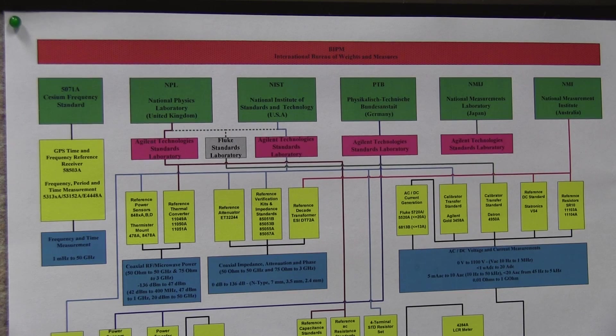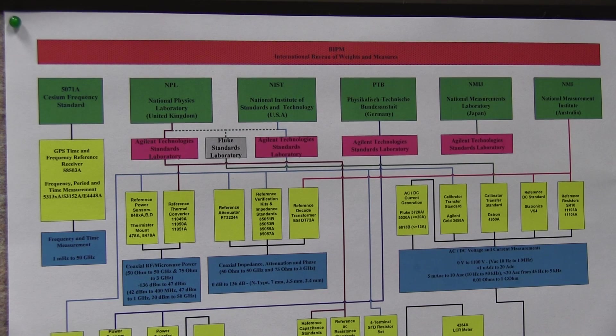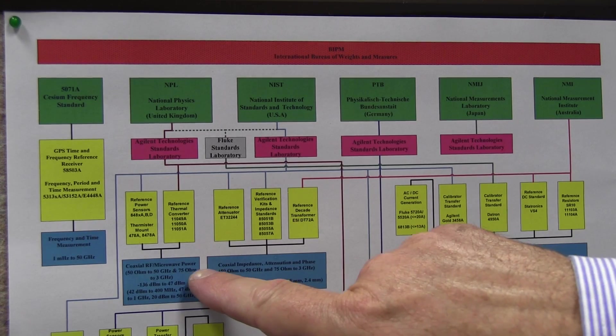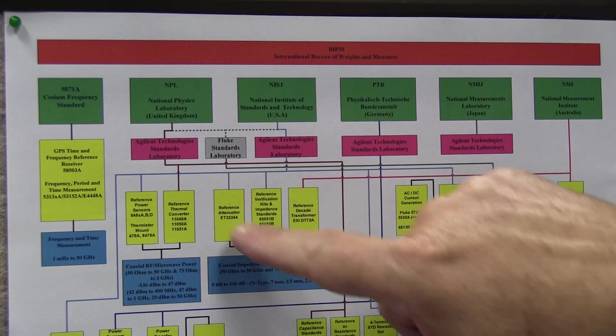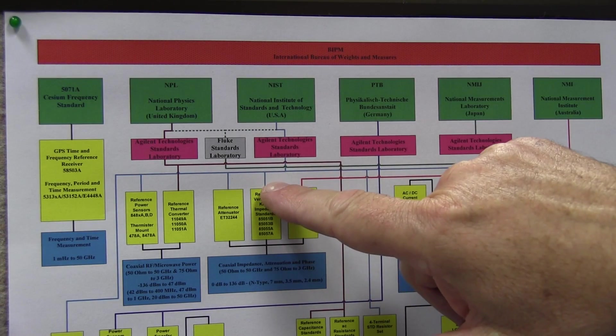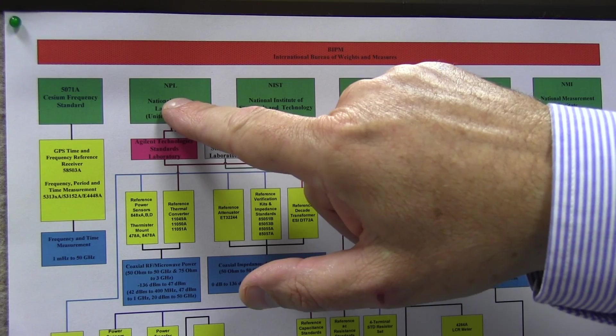For other items like power and attenuation, we go through different laboratories, different national laboratories. For example, for attenuation, we are traceable. Our RF power and attenuation chart actually goes up. We actually bypass for attenuation, we bypass these chains and go directly to NPL.